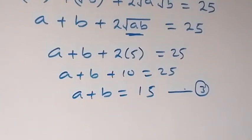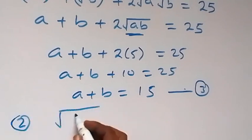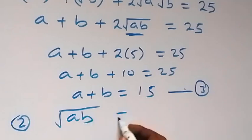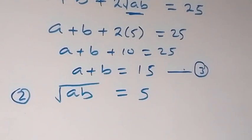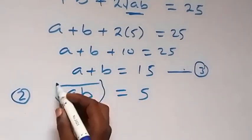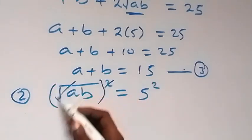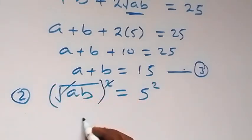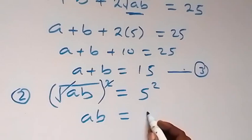From equation 2, we have root AB equals 5. Let's square both sides — the square cancels the square root — and we have AB equals 5 squared, that is 5 times 5, which is 25.